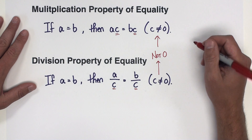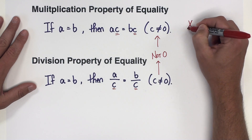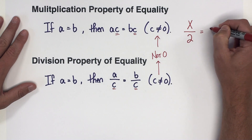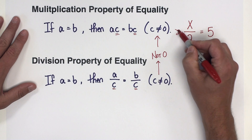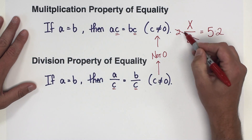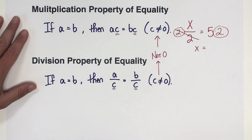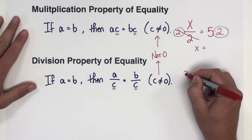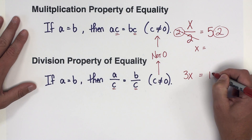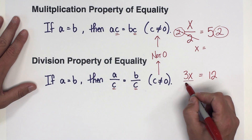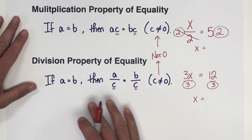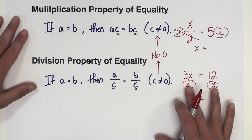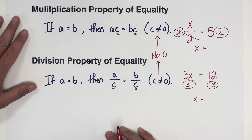For the multiplication property, we've all seen equations like x divided by 2 equals 5. To solve that, we multiply both sides by the denominator — that's the multiplication property of equality. The division property of equality is typically the last step in solving an algebra equation. For example, if we have something like 3x equals some value, we would divide both sides by 3. It's that dividing by 3 on both sides that is stated in the division property of equality, as long as we do the same to both sides.